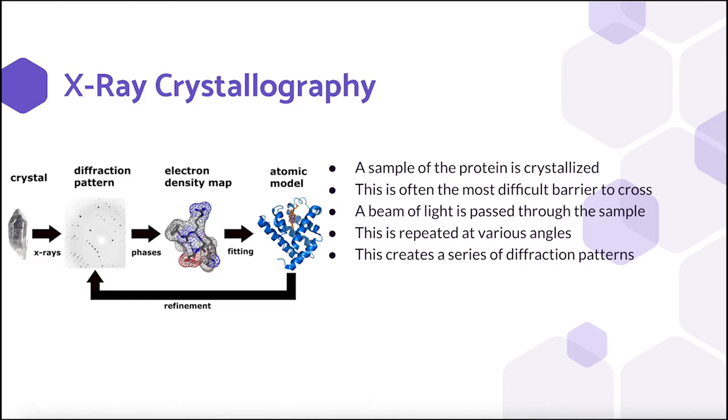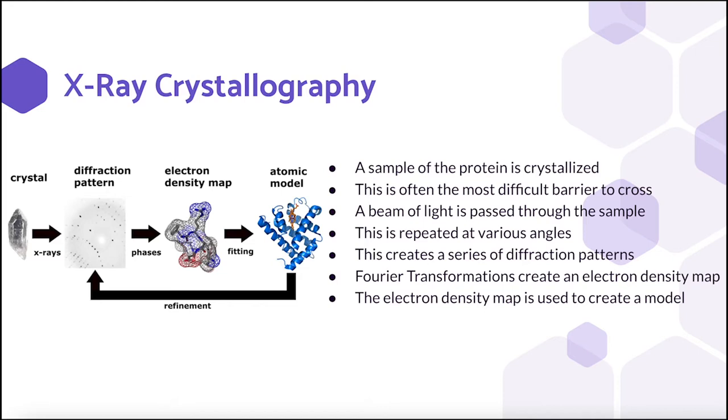The two-dimensional images of diffraction patterns are then analyzed by a computer using a mathematical method called Fourier transformations to reverse engineer a three-dimensional model of the density of electrons within the sample, which then helps render the 3D structure of the protein.